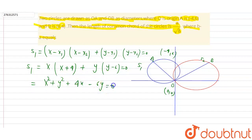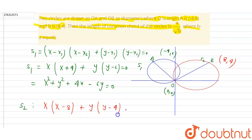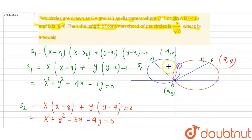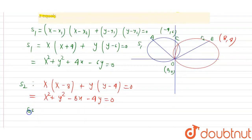So S1 gives x squared plus y squared plus 4x minus 6y equal to 0. Similarly, for S2 using points (0,0) and (8,4): x minus 0 times x minus 8, plus y minus 0 times y minus 4, equal to 0. This is the common chord, which we will call the common code.